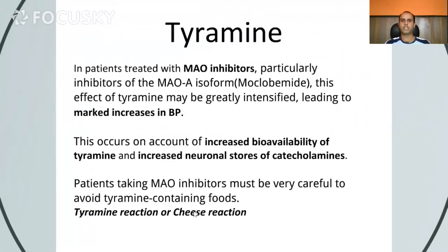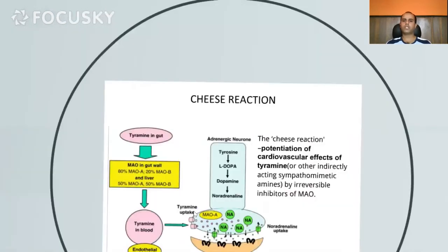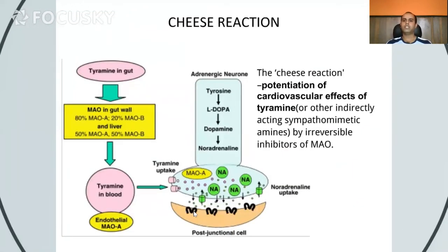In patients treated with MAO inhibitors, particularly irreversible inhibitors such as phenelzine, which is an antidepressant drug, the effect of tyramine can be greatly intensified, leading to a marked increase in blood pressure. This occurs due to increased bioavailability of tyramine and increased neuronal stores of catecholamines. This is known as the tyramine reaction or cheese reaction: the potentiation of the cardiovascular effects of tyramine or other indirectly acting sympathomimetic amines by irreversible inhibitors of MAO.